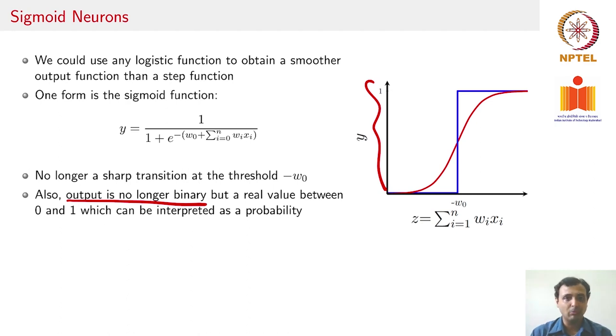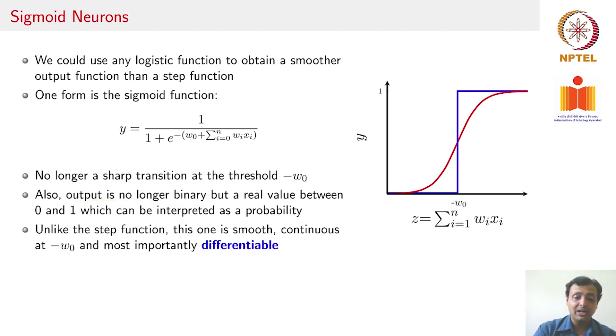Clearly here you no more have a sharp transition at a threshold but a smooth transition as your input keeps changing. Also, your output now is no longer just binary, not just 0 or 1, but can be any value lying between 0 and 1 which could potentially be interpreted as a probability of the output. If your output was 0.6, you would say that this patient has a 60 percent risk of suffering from cancer or heart attack. More importantly, this function is smooth, continuous, and also differentiable.